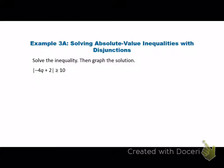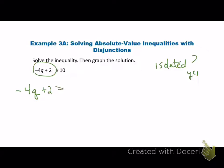Okay, so we're going to go through the steps. I'm going to go over here. Is it isolated? Yes or no? Yes? Okay. Then we're going to do our split. We're going to take that inside out. So we're going to have the negative 4Q plus the 2 greater than or equal to 10. That's our first little split.